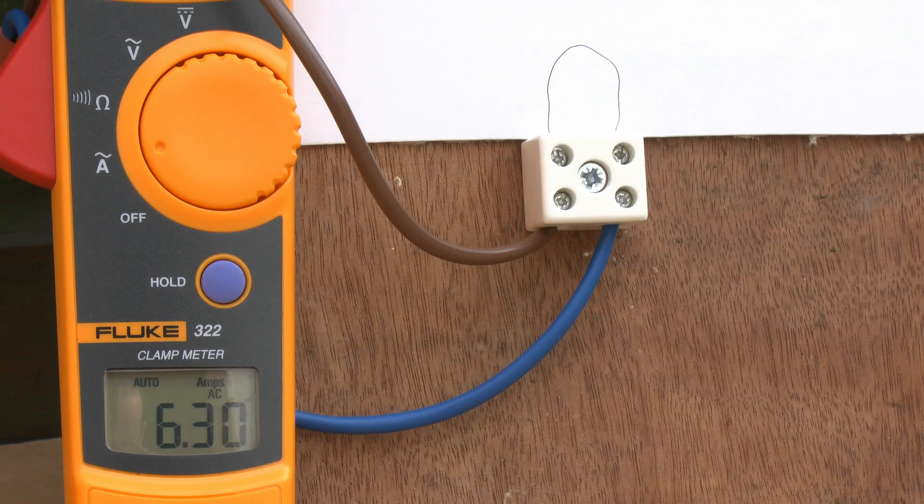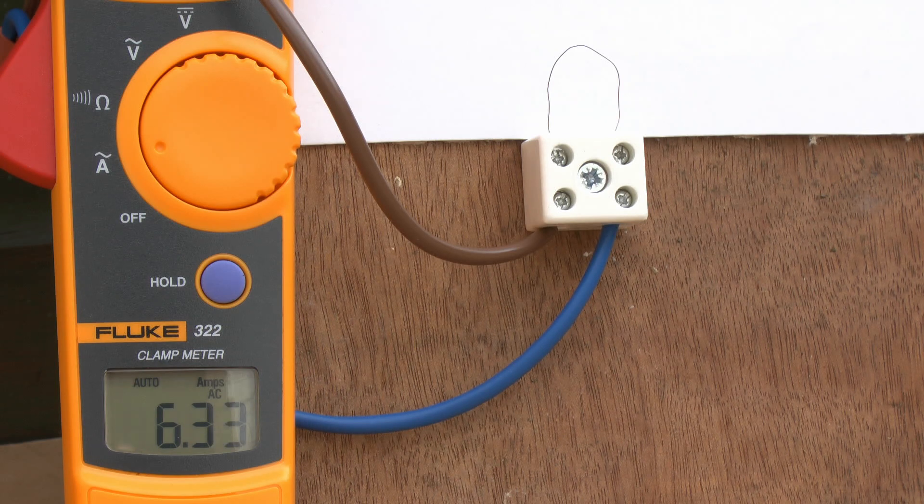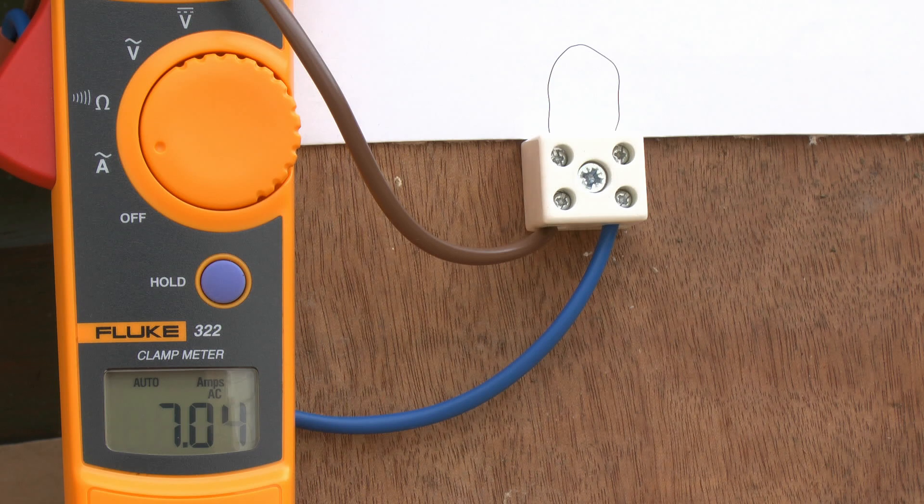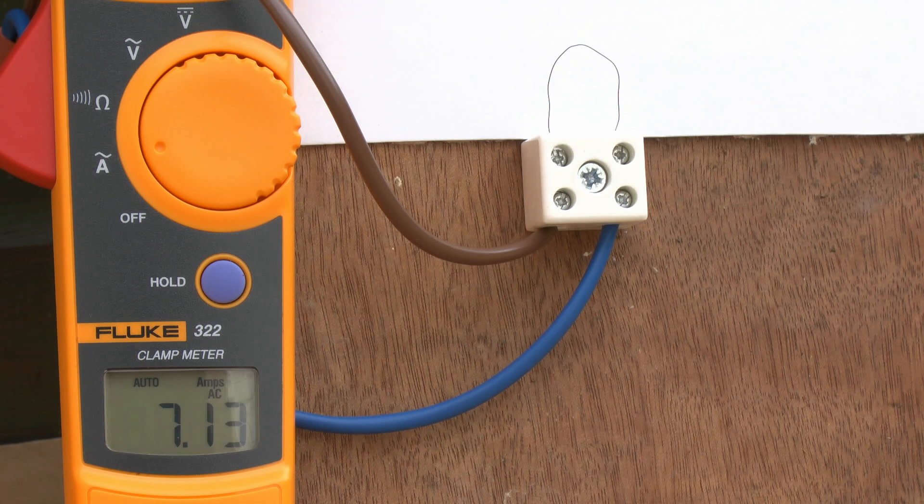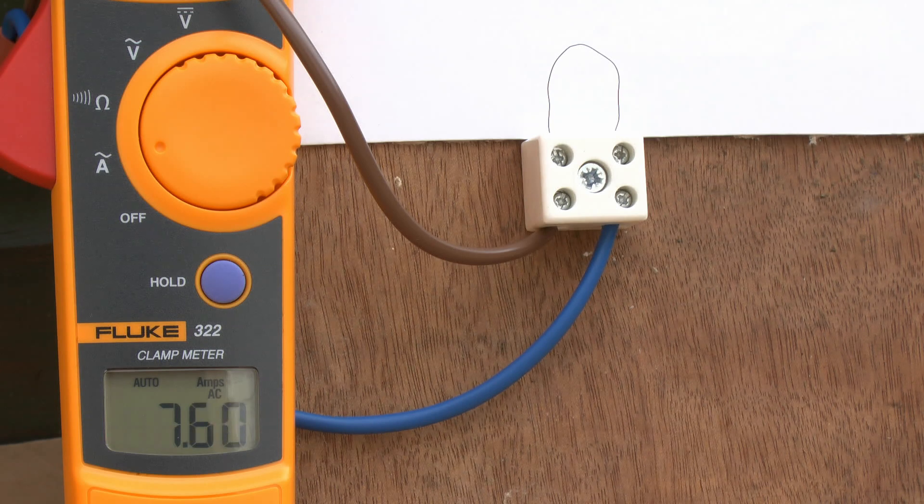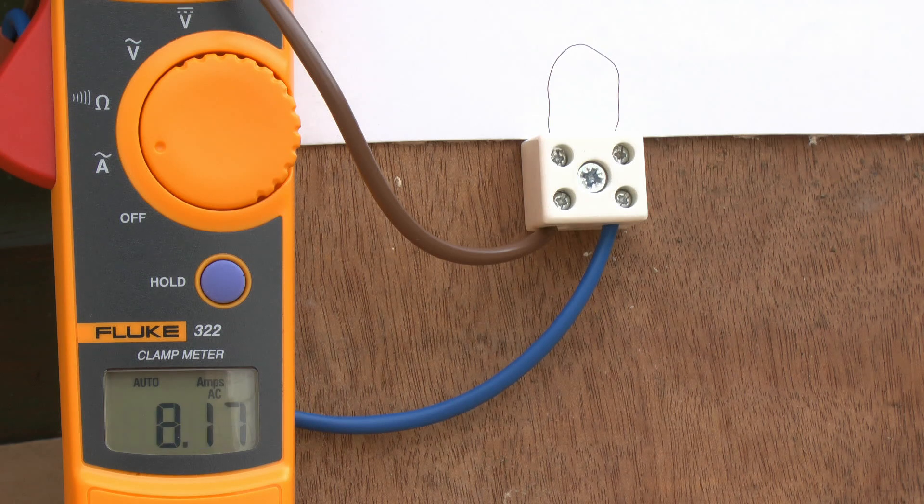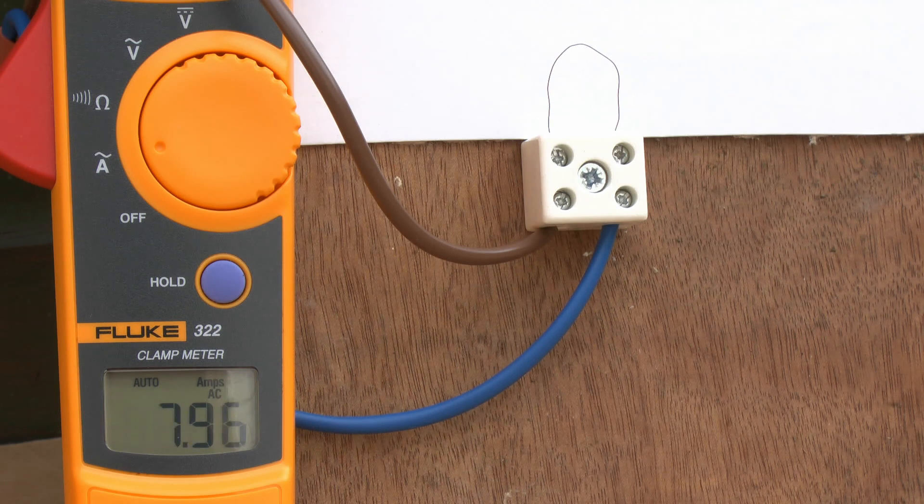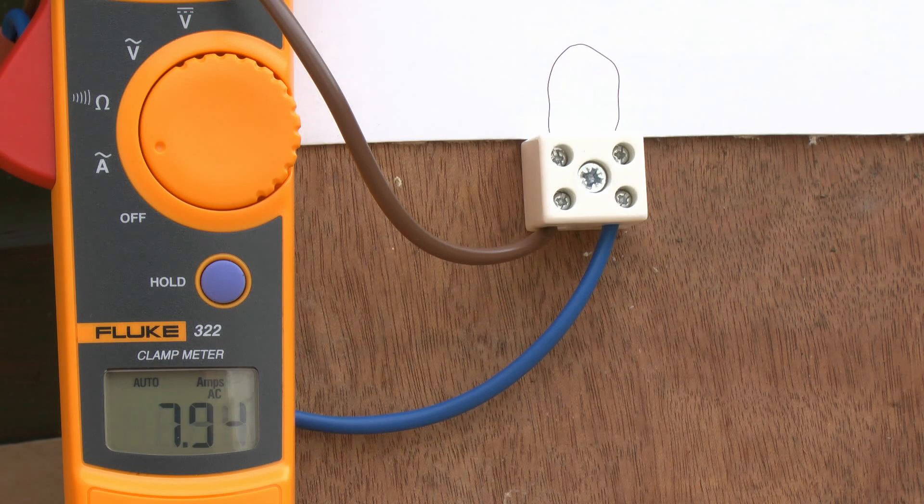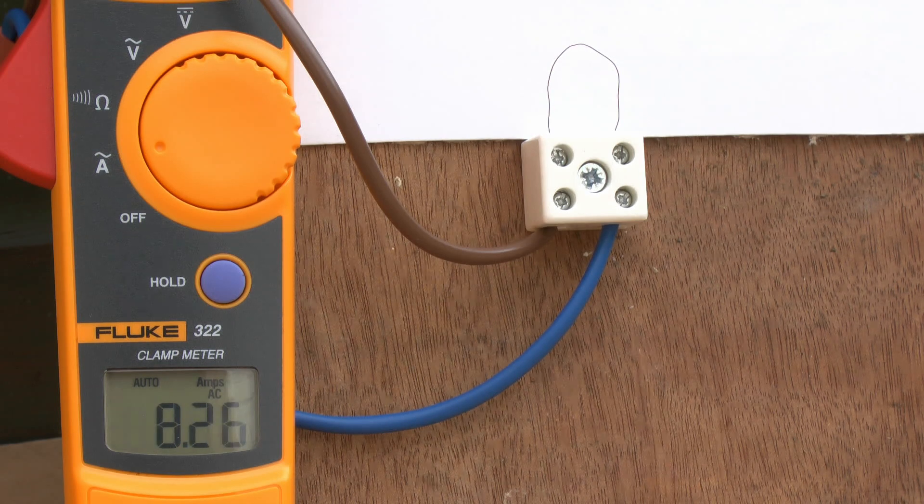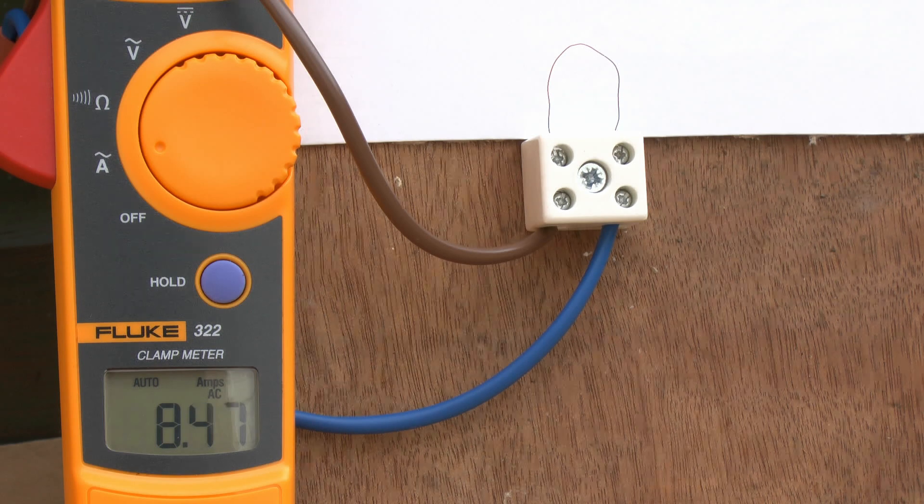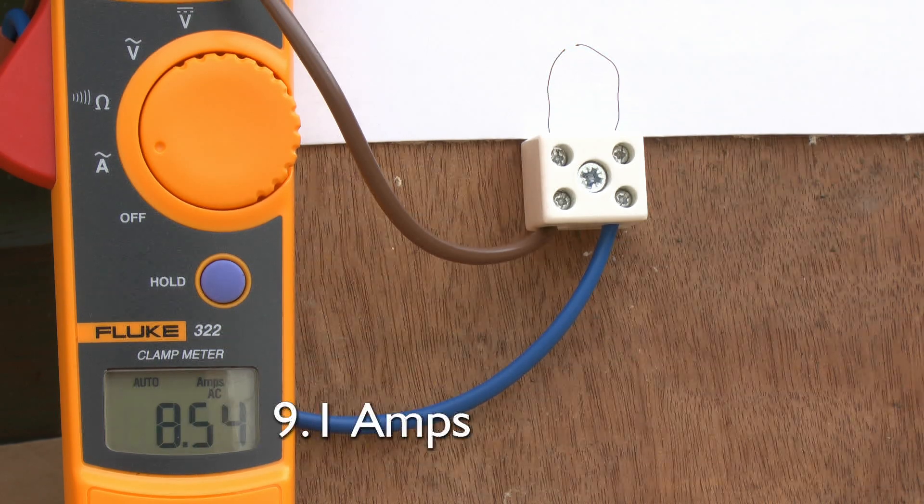At 6.3, again nothing actually happens. That's around 8 amps. It's still holding that. Notice the current is slightly falling because the wire is actually heating up. And now it's broken.